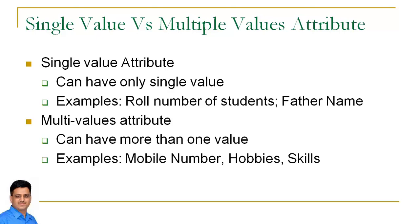Jabki student ke paas multiple mobile numbers ho sakte hain, multiple hobbies ho sakti hain, multiple skills ho sakti hain. So mobile number, hobbies, and skills are attributes jismein more than one value possible hai. Jis attribute ki more than one value possible hai, hum us attribute ko multi-value attribute bolte hai. Aur jis attribute ki sirf single value possible hai, hum use single value attribute bolte hai.